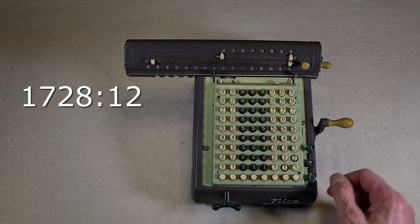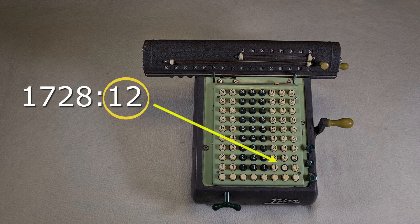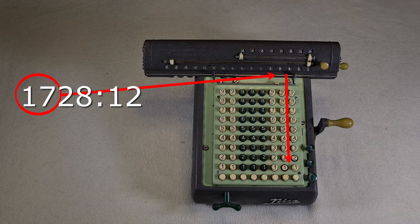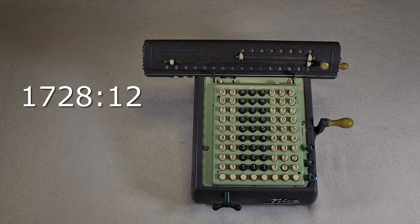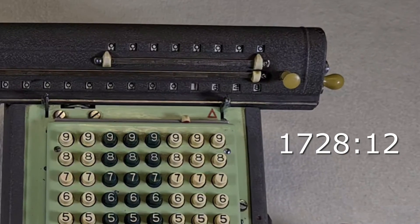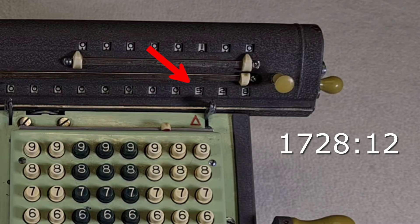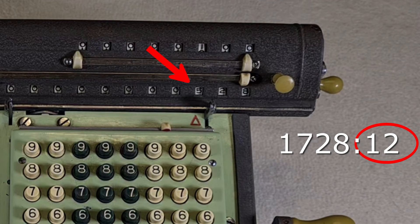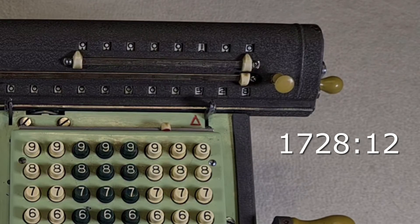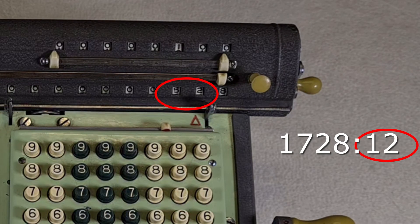Then I set the divisor 12. Then I move the carriage until the divisor 12 is directly under the first 2 digits in the dividend. 12 is lower than 17 and you can do the calculation. I turn the crank counterclockwise. Now 5 is lower than 12, so I move the carriage of the calculator to the left again. 52 is higher than 12 and I can continue the calculation turning the crank again.